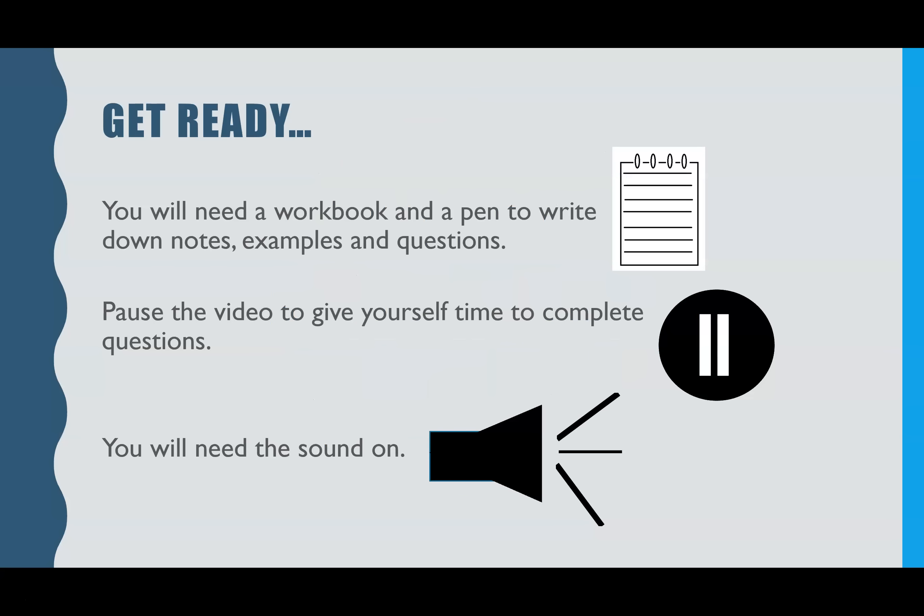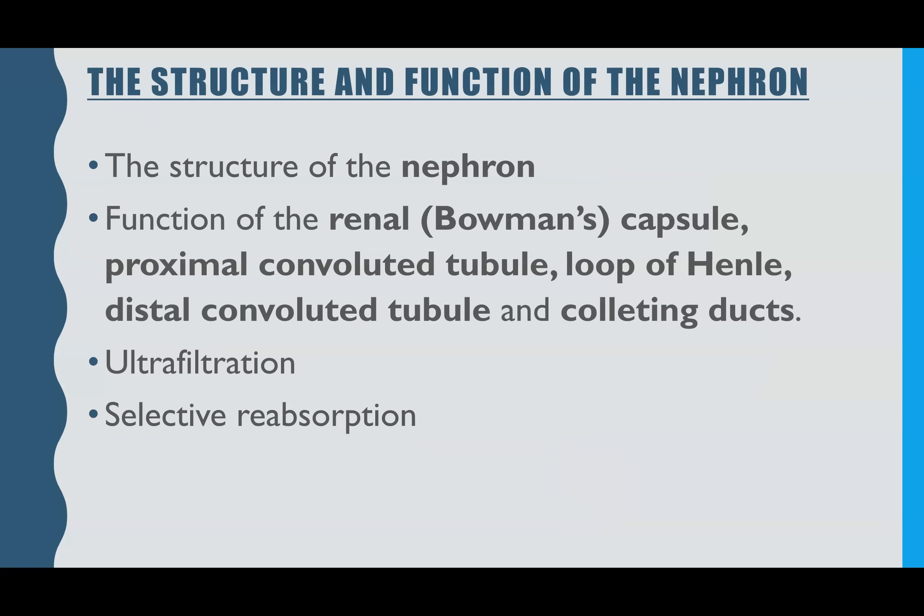If you want to make some notes as you go, get some paper at the ready and pause it as we go through. What we'll cover in this video is the structure of the nephron, function of the renal capsule, proximal convoluted tubule, loop of Henle, distal convoluted tubule and the collecting ducts. We'll go through how ultrafiltration occurs and where it happens, and what selective reabsorption is and where it happens.